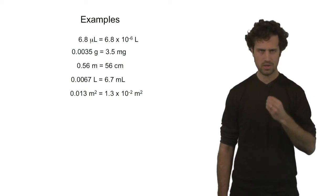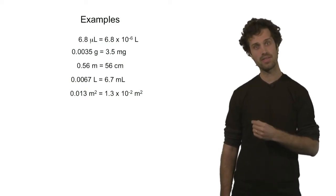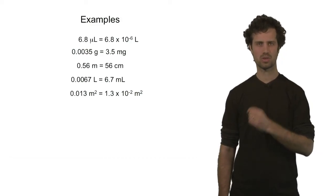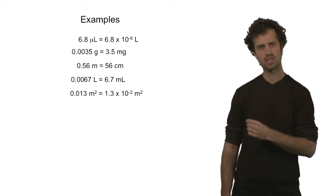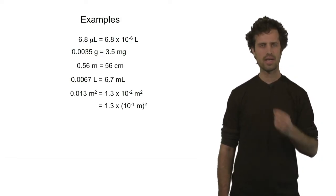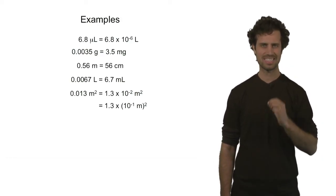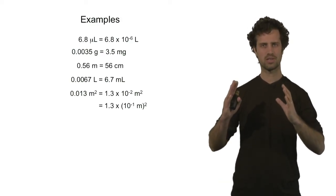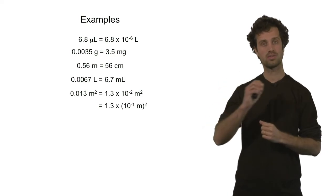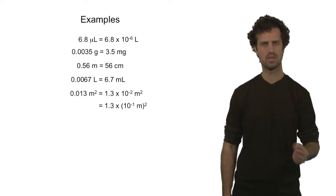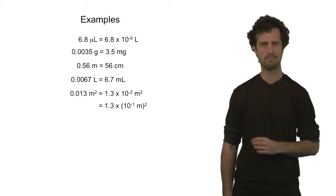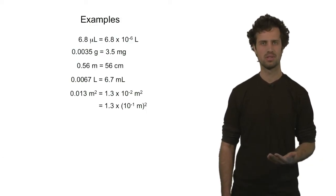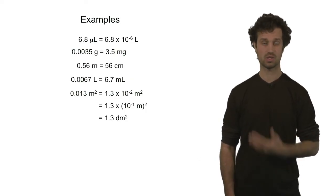0.013 meters squared can be rewritten as 1.3 times ten to the minus two meters squared. I can rewrite this as 1.3 times ten to the minus one, all squared, meters squared. Because if you square ten to the minus one, you get ten to the minus two, and if you square a meter, you get a meter squared. Now ten to the minus one meter equals a decimeter, so this is 1.3 decimeters squared.